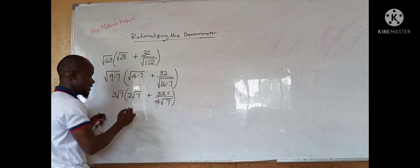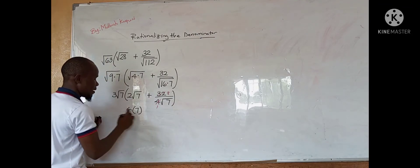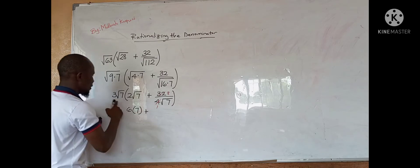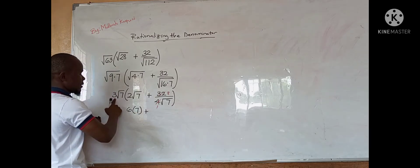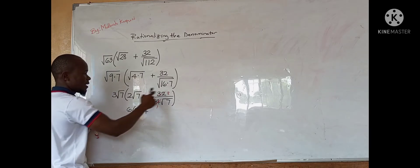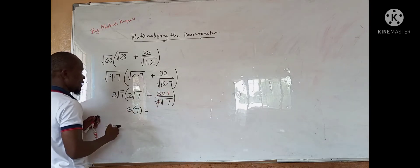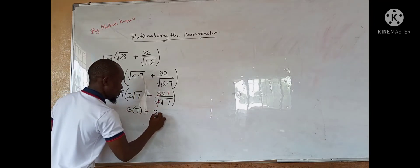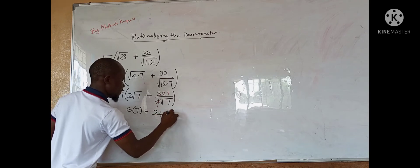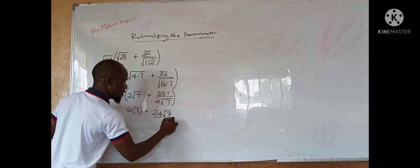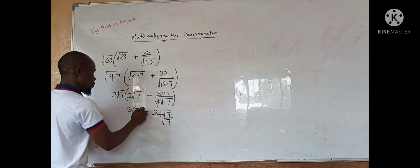The root of 49 is 7. So we have 6 root of 7 plus 3 root of 7 times 8 gives us 24 root of 7 over root of 7.